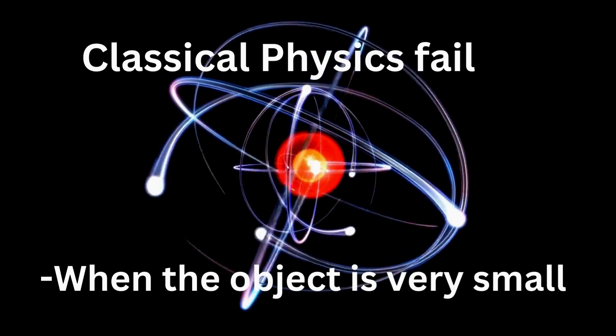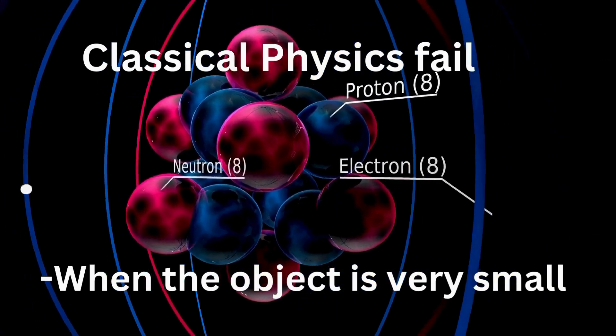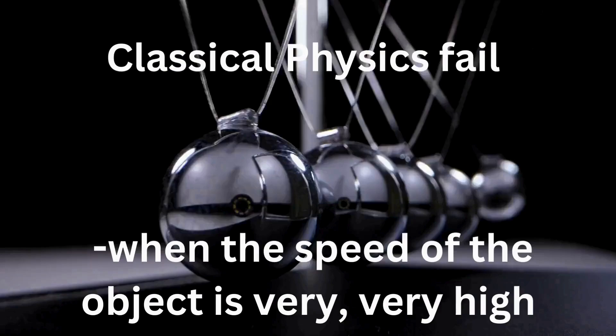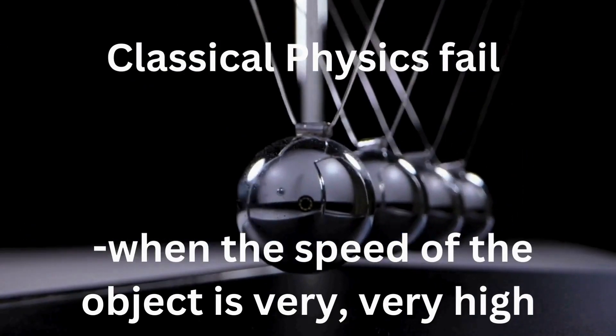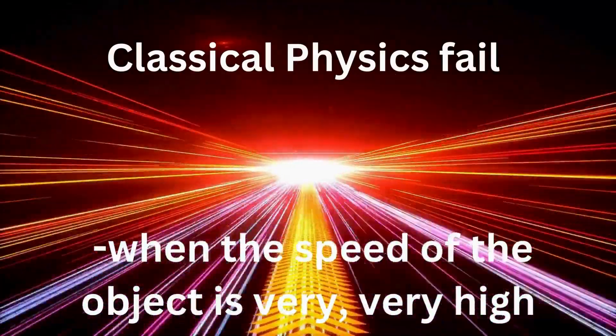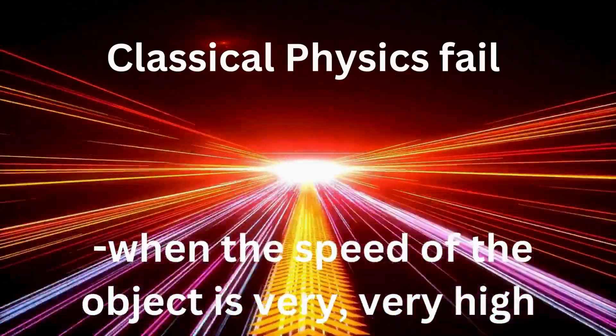When do the laws of classical mechanics fail? When the object is very small, very very very small masses like proton or neutron. Similarly, the laws of motion that is classical physics fail when the speed of the object is very very high. For example, the speed of light.